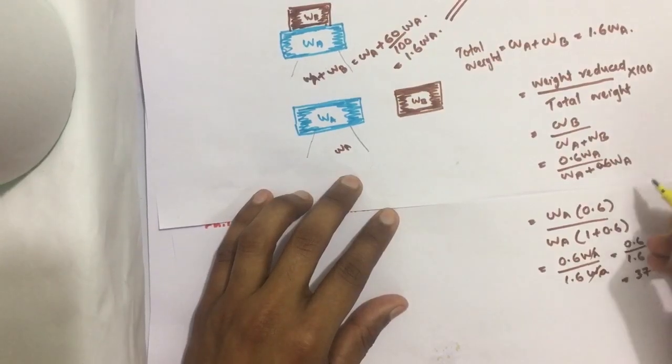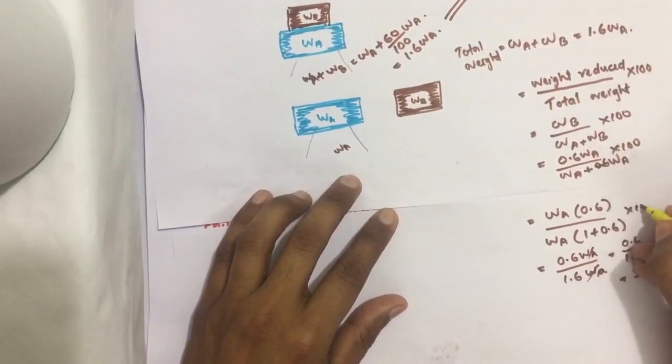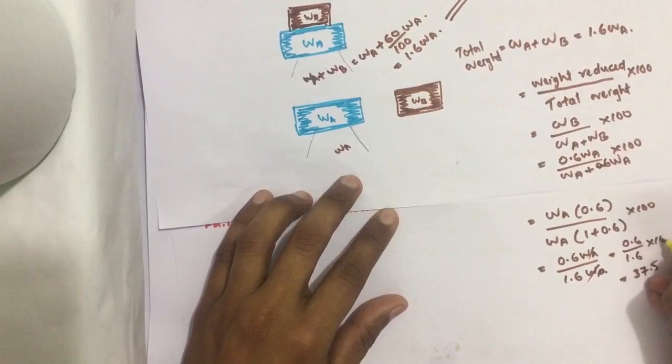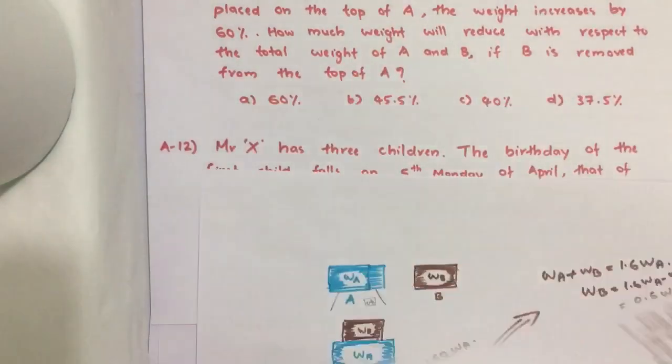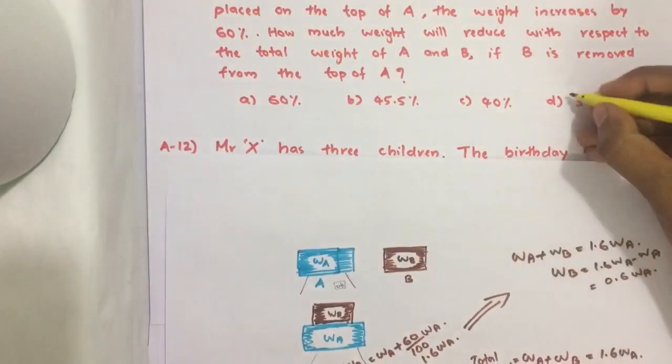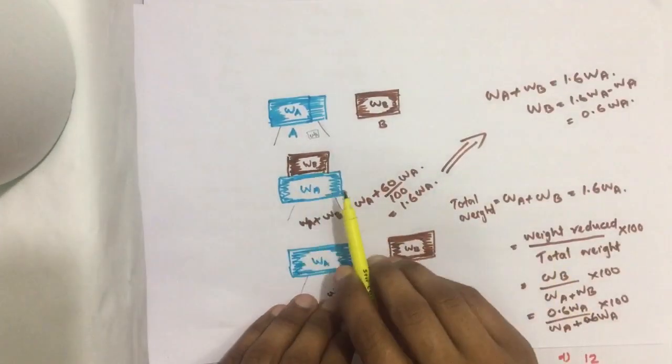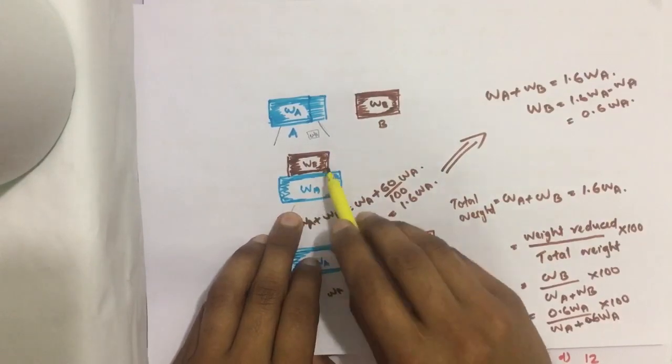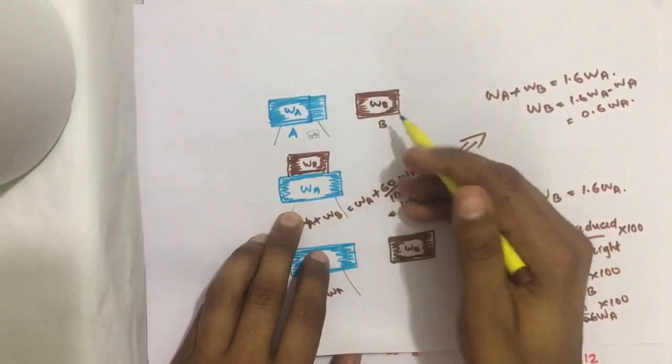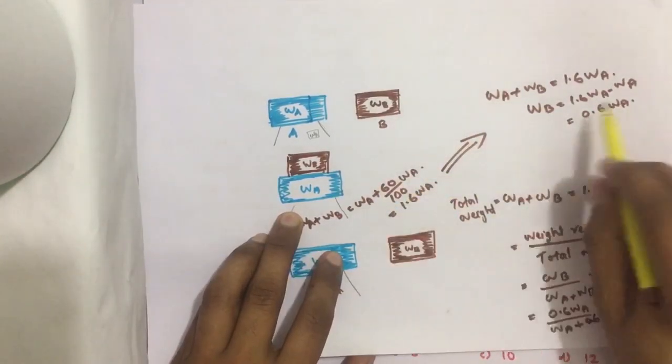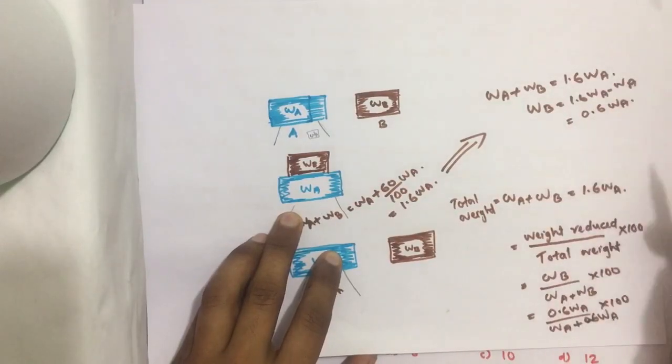After solving this we get 37.5. We need to find the answer in percentage, so we get 37.5%, which is option number D. Already from here itself we know the weight increase is 0.6 times, 60 percentage, that means B equals 60 percentage of A.